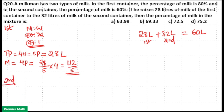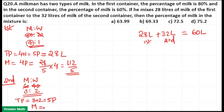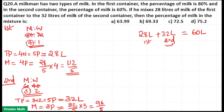In the second container, milk is 60% and water is 40%, giving a milk to water ratio of 3:2. Total parts equals 3 plus 2, which is 5 parts. The milkman took 32 liters, so 1 part equals 32/5. Milk in the 32 liters is 3 parts, that is (32/5) × 3 = 96/5.